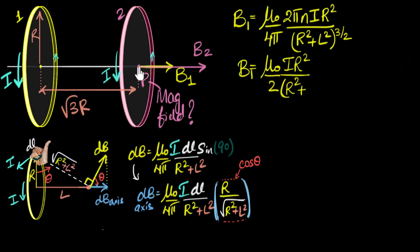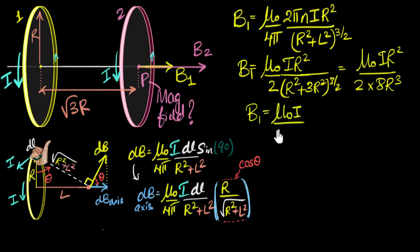So B1 is going to be, if I simplify, I get mu naught by two, n is just one turn, i is i, r is r, divide by r squared plus, what is l here? Well, l is this distance for the first coil. This is where we are calculating magnetic field. So this distance is root three r. If I square that, I get three r squared, whole power three over two. So if I simplify, I get mu naught i r squared by two. This is four r squared. Four r squared square root is two r. And then I take the cube. I get eight r cubed.